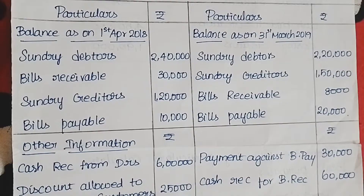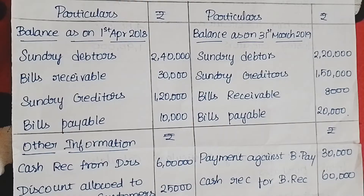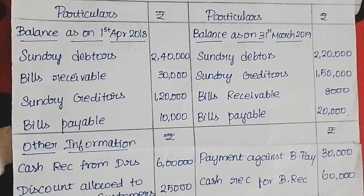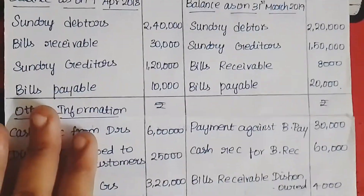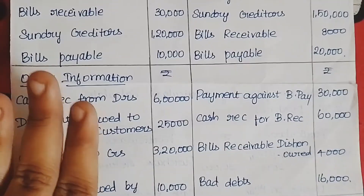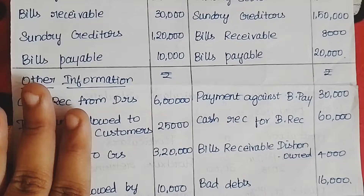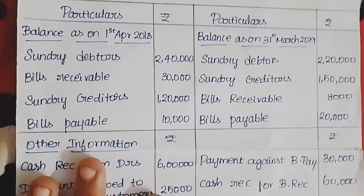First, we will find credit sales. How to find credit sales? How to find total debtors? Before total debtors, we will find the bills receivable information. First, we will find the bills receivable account. If you have any information, we will find all of these bills receivable account entries.